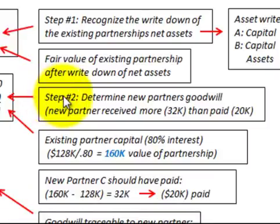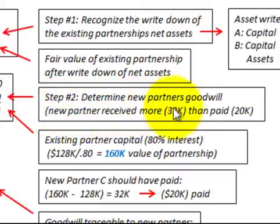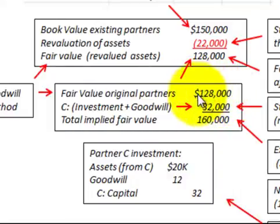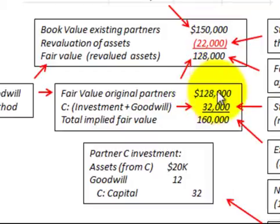The next step is Step 2, where we have to determine the new partner's goodwill. In this case the new partner is going to receive more than they paid — they're going to receive $32,000 but paid only $20,000. We start out with the fair value of the existing partners after the revaluation of the assets, which is $128,000.